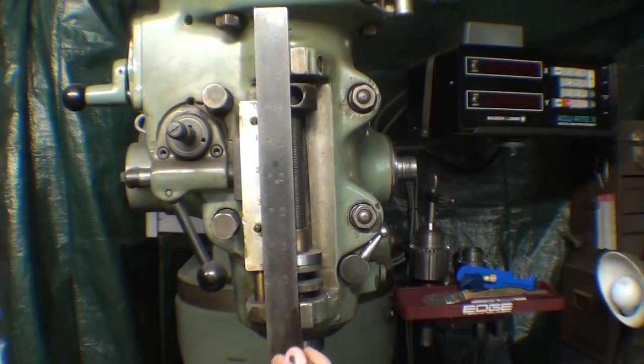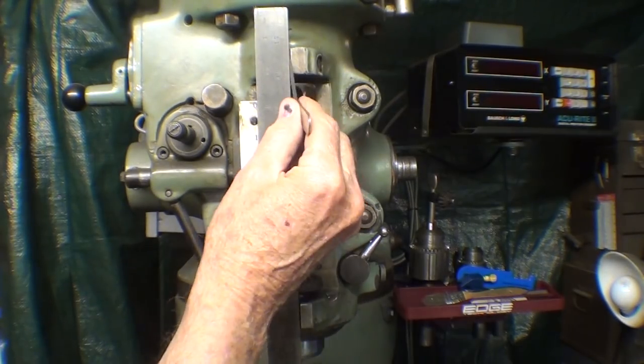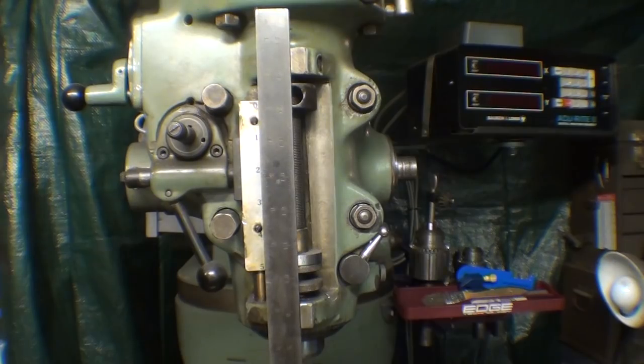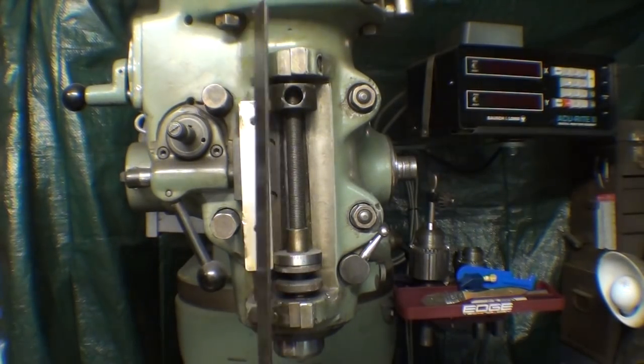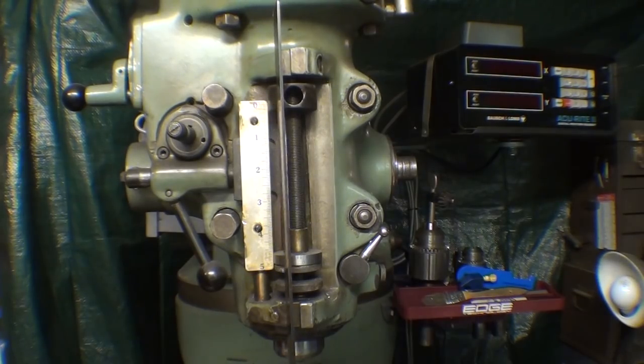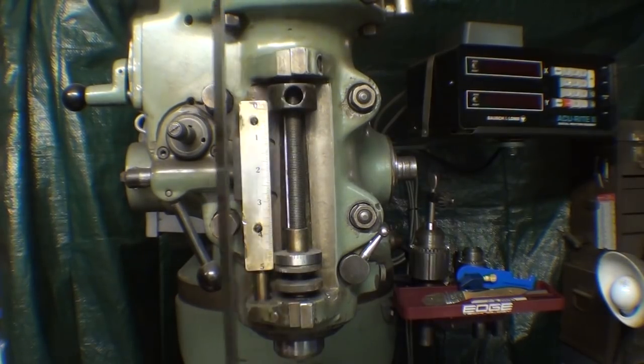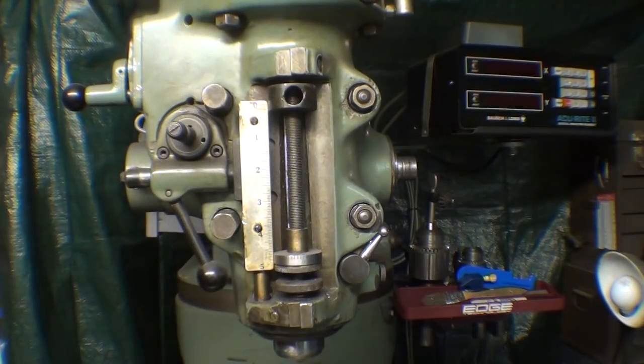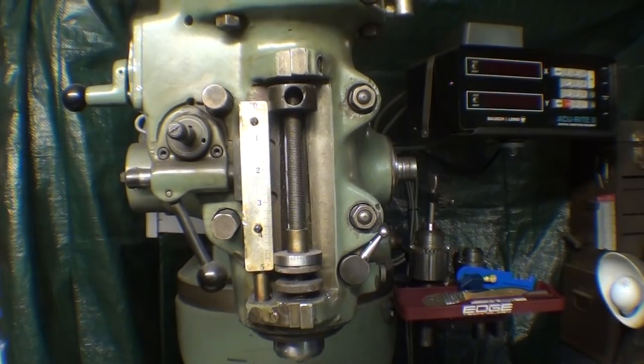You can use feeler gauges, here, or here, also, to double check that. That can be done in the nodding position, in this direction, as well. But you need a precision square, when you do that, not a carpenter square. But that's not what I'm going to do now, I'm going to use an indicator.